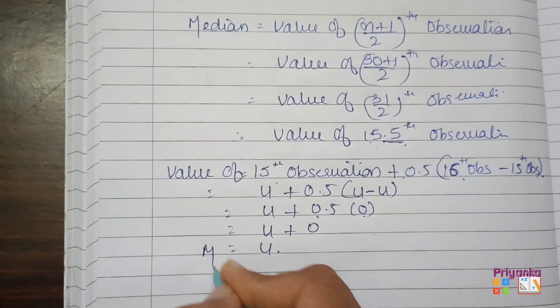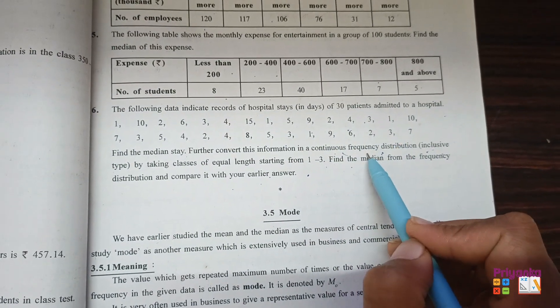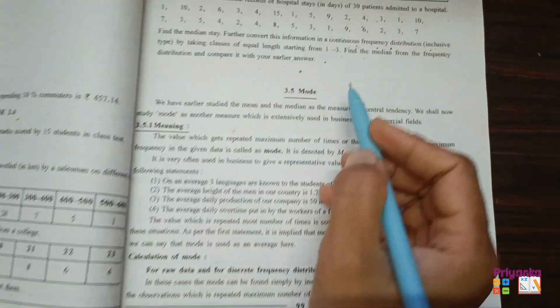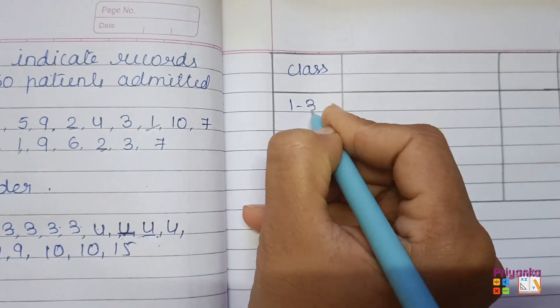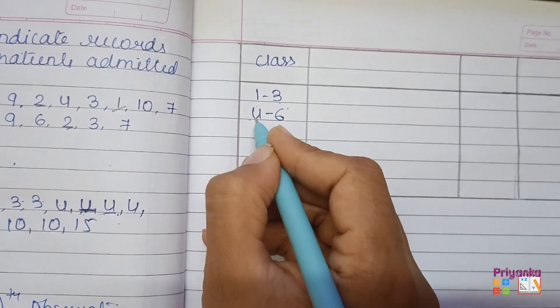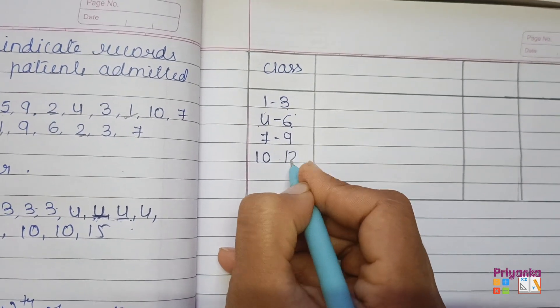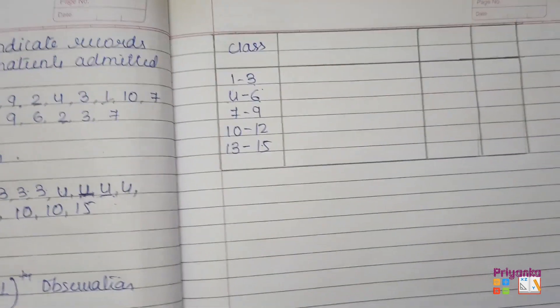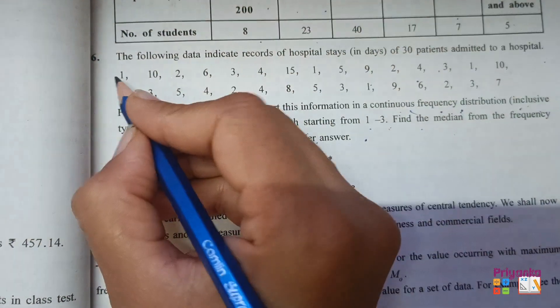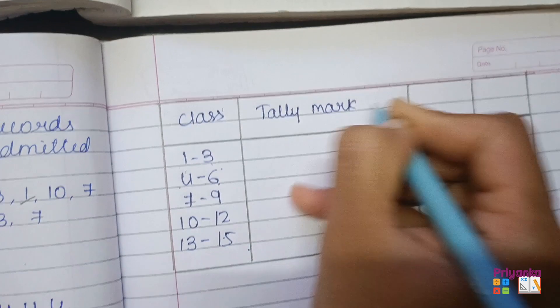So the median from raw data is 4 days. Moving to the next part: we have to make a continuous frequency distribution. For this, we will use tally marking to find the correct frequency. We prepare classes of equal length starting from 1 to 3 in the inclusive type, so the next class is 4 to 6, then 7 to 9, then 10 to 12. Our class intervals are ready.